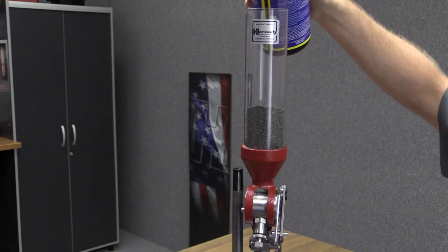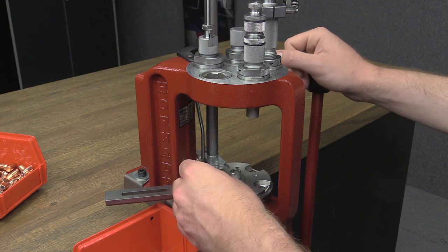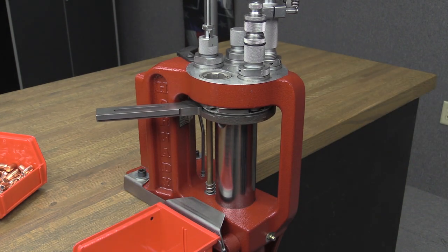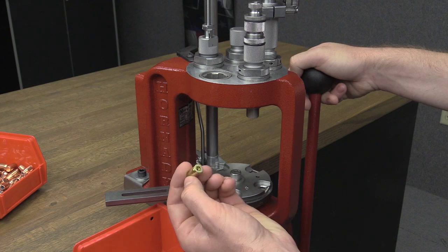To begin reloading, start with a single empty cartridge case and run it through all the loading stations to check for adjustments. Make sure the sizing die is adjusted properly and the depriming pin knocks out the old primer. Check to make sure the primer slide picked up a primer from the primer tube.